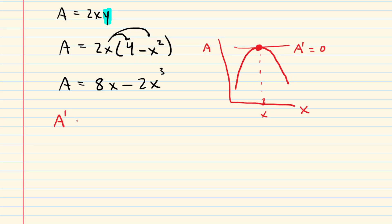We're going to calculate the derivative A prime. The derivative of 8x, of course, is just 8. And then we do a power rule for the other term. We're going to have negative 6x to the power of 2. We now set that equal to 0.